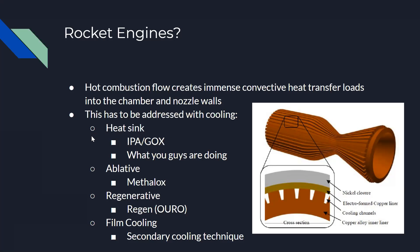Heat sink was used in the IPA/GOX engine — basically just a giant cylinder of metal where the inside chamber was very small compared to the total metal mass, absorbing heat. We're going to have you guys do the math for a heat sink engine: figuring out how long you can fire it and how big it needs to be to absorb all the heat.